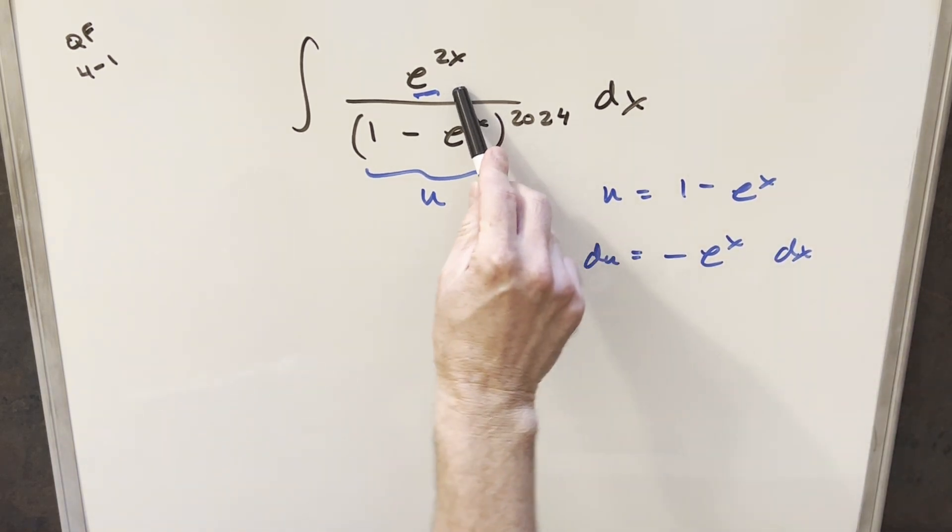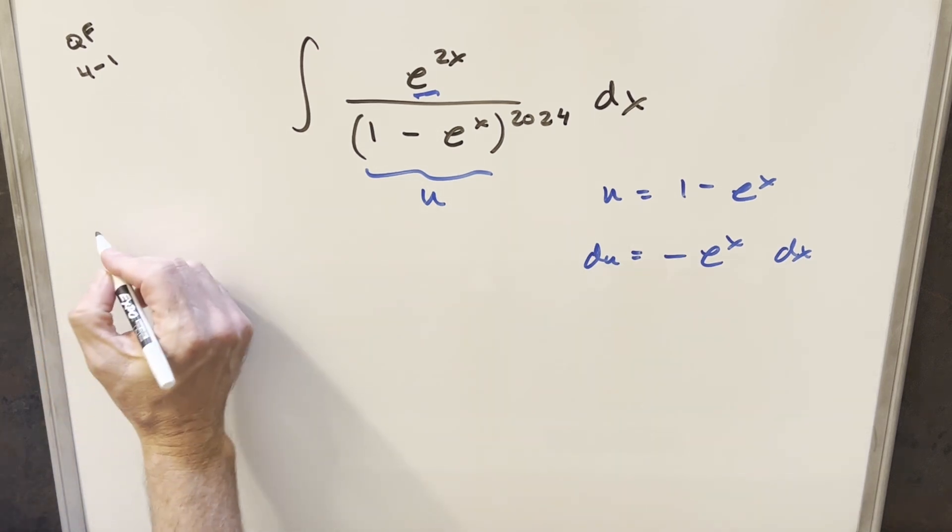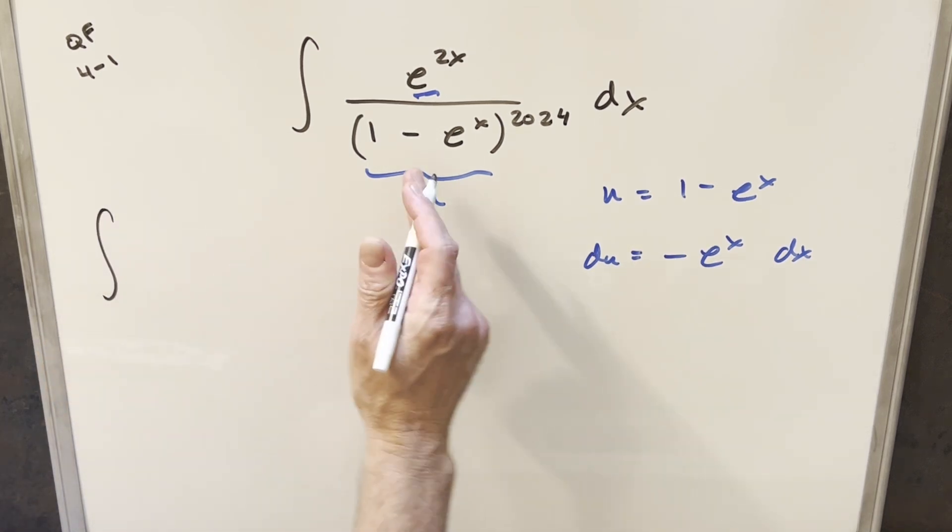Now, like I mentioned, we do have this e to the 2x here in the numerator, and it's not quite what we have here. So what I want to do, I'm just going to rewrite. Before I do the substitution, I'm going to rewrite the integral.